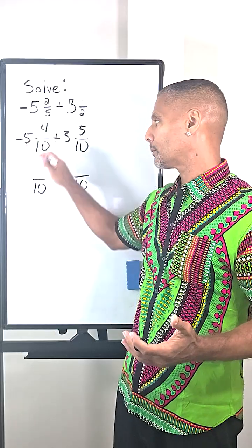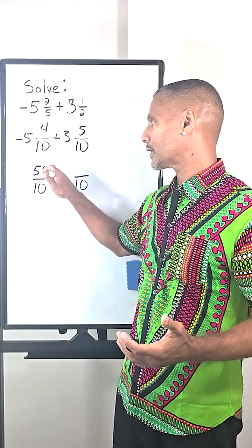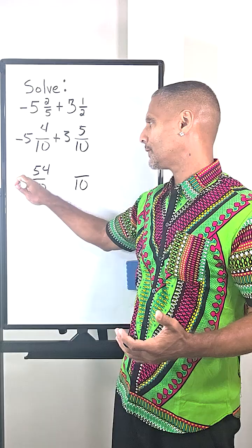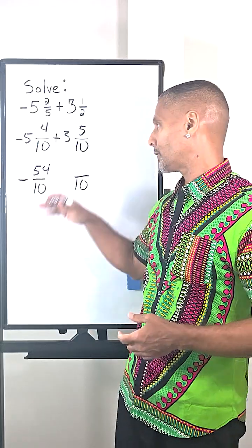That's going to be 50 plus four more is 54. So when converting this mixed number, we get negative 54 tenths.